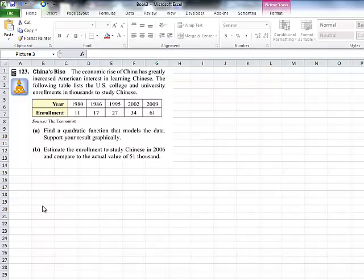It says find a quadratic equation that models the data. Support your answers graphically. And then estimate the enrollment to study Chinese in 2006, which is obviously in between these two, and compare that to the actual value of 51,000.